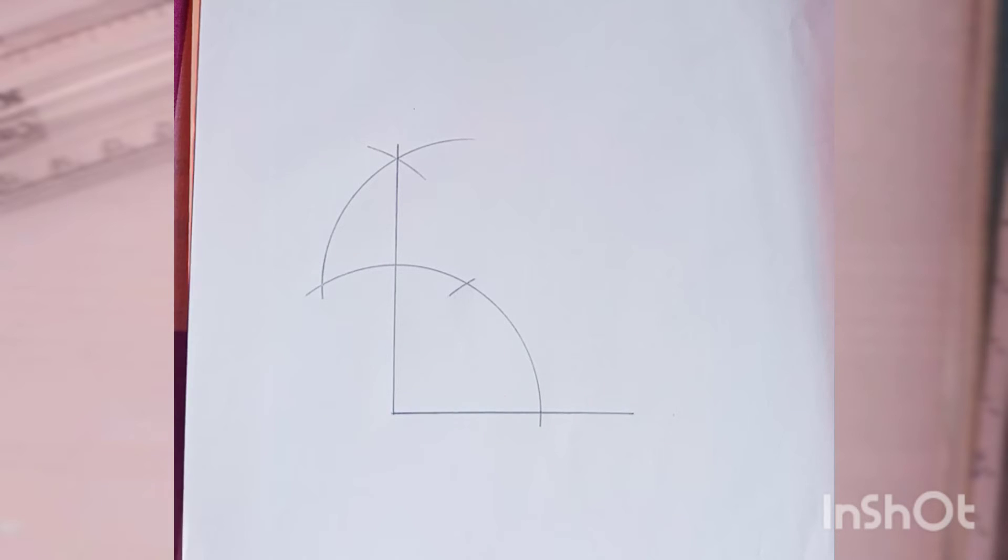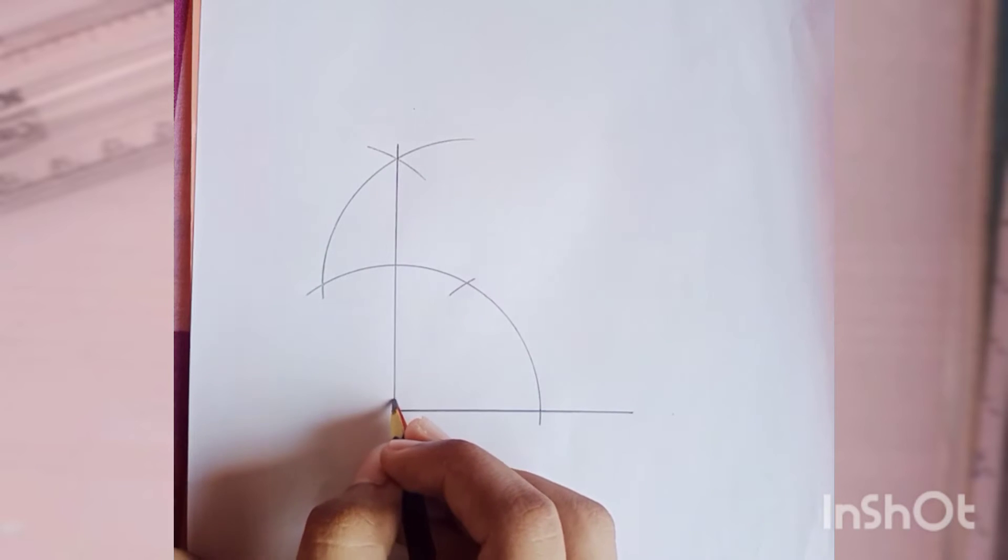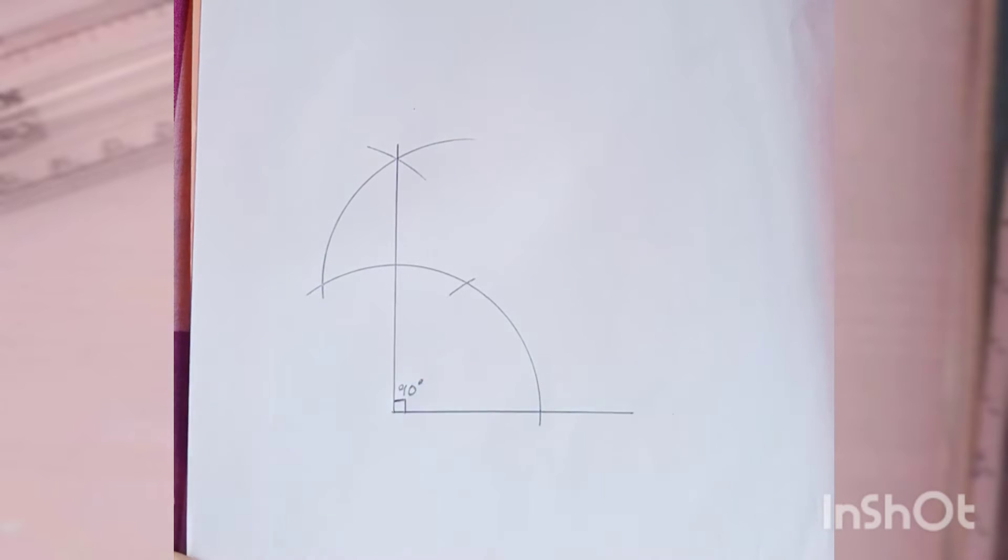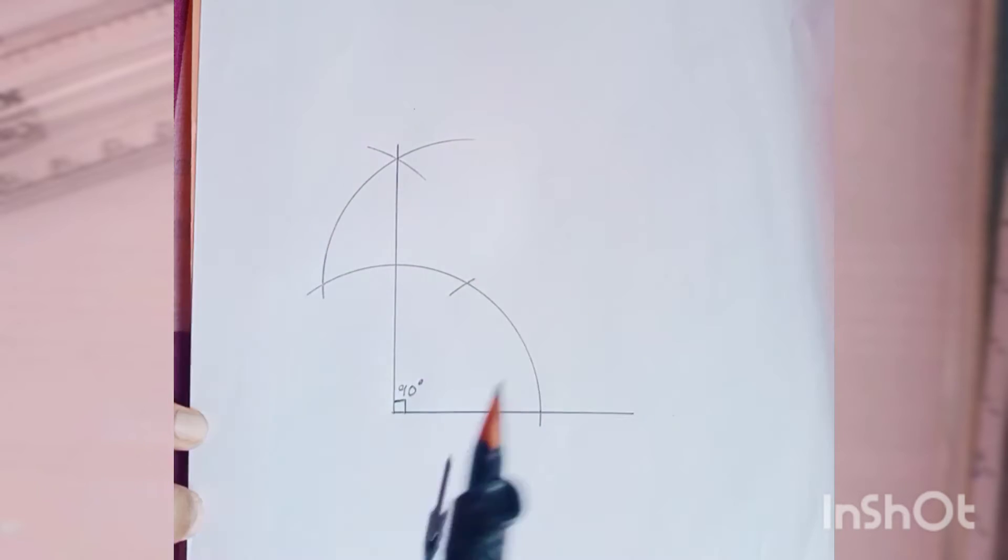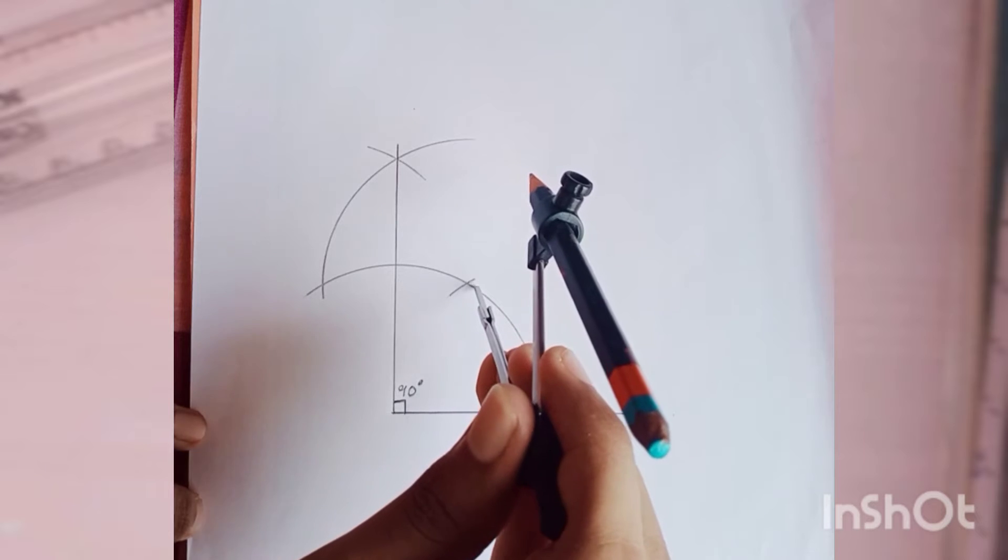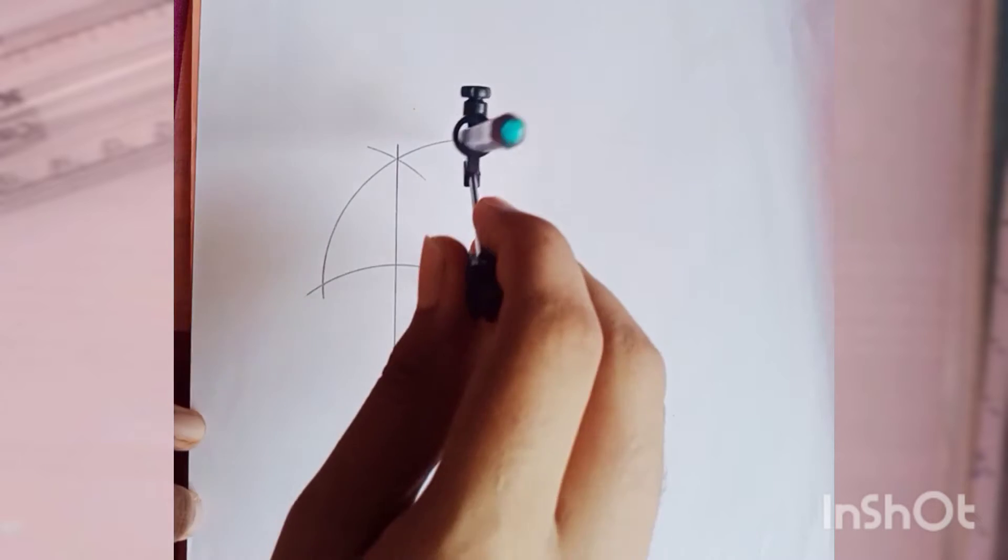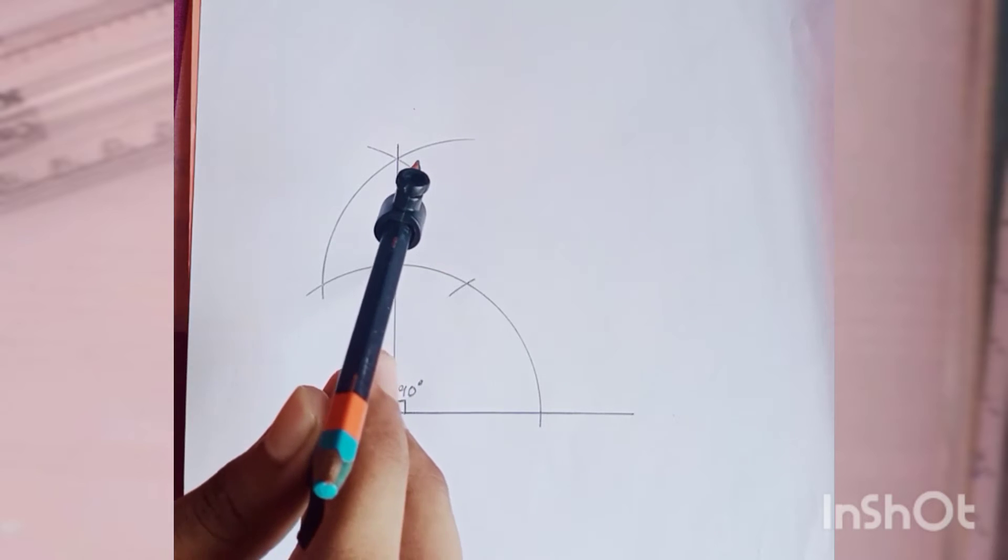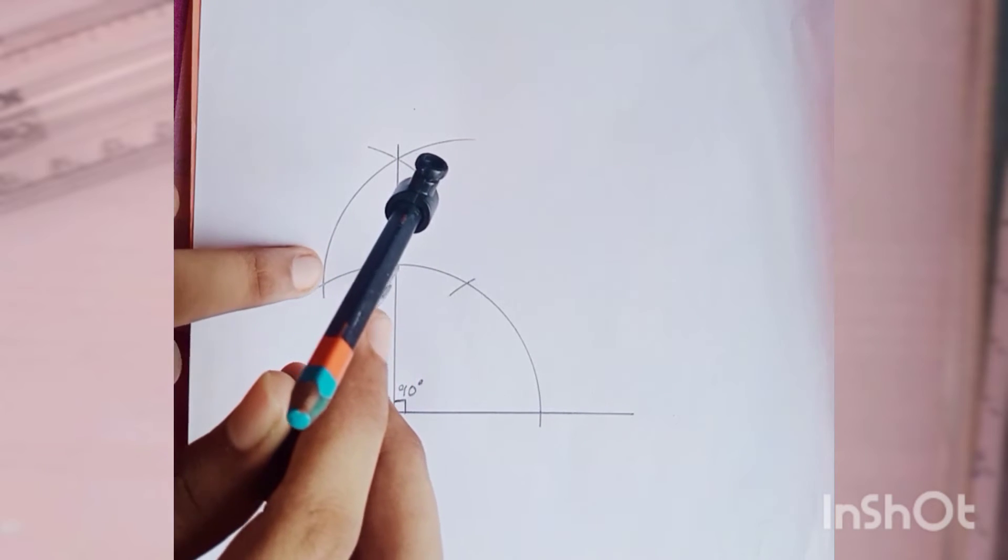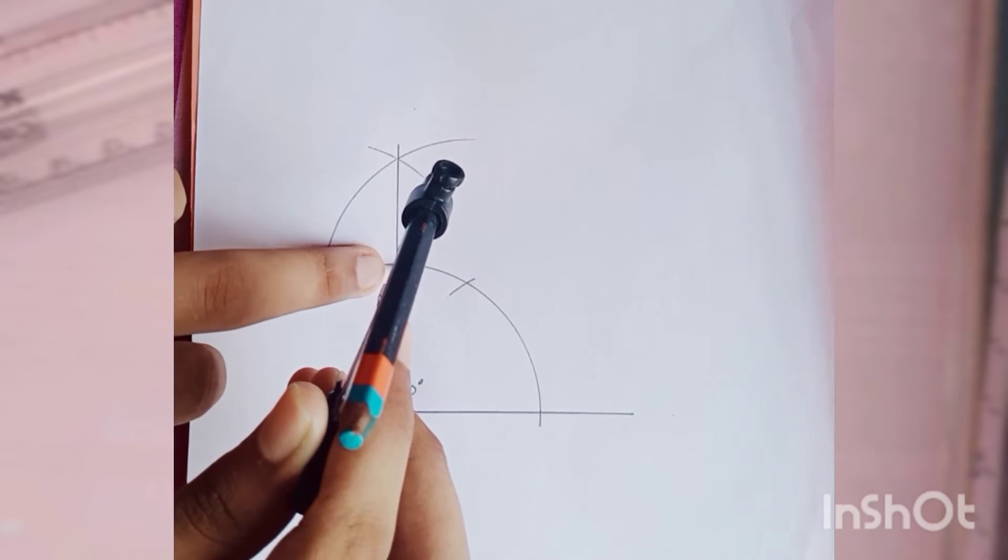So we draw a line, as you can see I have drawn a line. So this is 90 degrees. Okay, so again from this point we keep the needle with the same measurement. Already I have drawn a long arc, so I don't have to draw the arc every time. Then from this point, the arc that first cuts the line which passes 90 degrees,